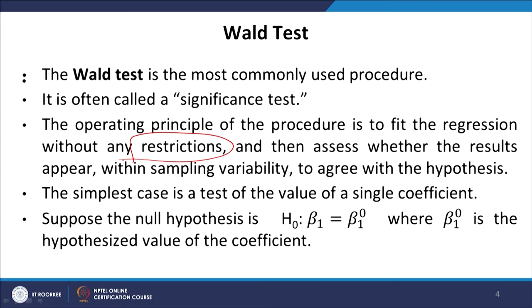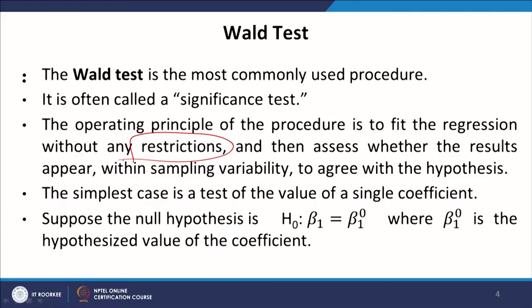When we talk about restrictions, you may recall that in module 13 we learned that certain restrictions could be put on some of the coefficients or parameter estimates, and how to test for that. Those kinds of analysis are not possible under the Wald test. The Wald test can perform a significance test for a complete model when we do not have any specific restrictions on any of the variables. What this means would be even clearer when we discuss the next test, which is the F-test. The simplest case is the test of the value of a single coefficient, so we begin with the Wald test in a simple linear regression format.